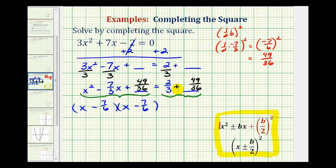Now on the right, to add these fractions, we need a common denominator, which would be 36, so I'll multiply this fraction by 12/12. On the right side, we're going to have 24/36 plus 49/36. We can write this as (x - 7/6)² equals 73/36.